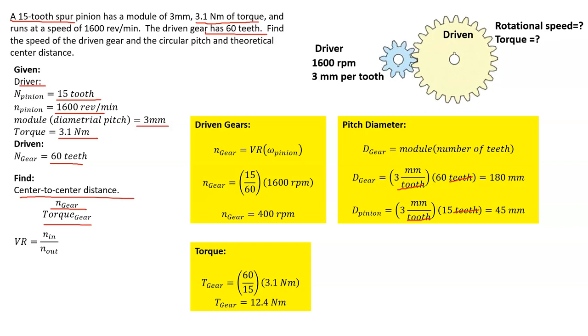15 teeth times 3 is 45 millimeters. And again, remember the ratios between them—there's a reason. You can find the velocity ratio so long as your diametral pitch is the same or your module is the same. You can find it using diameters, using torque, or using rotational speed.